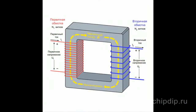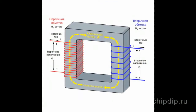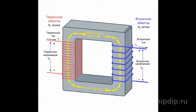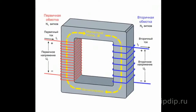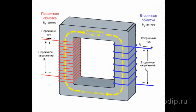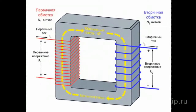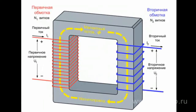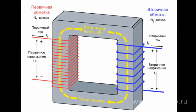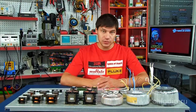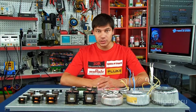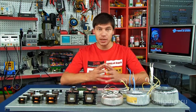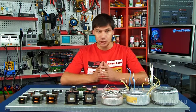The operation of the transformer is based on the phenomenon of electromagnetic induction. When connecting the primary winding to the alternating current source, an alternating current I1 passes through the winding turns. This current creates an alternating magnetic flow. Closing on the magnetic circuit, the flow is bonded to both windings, primary and secondary.